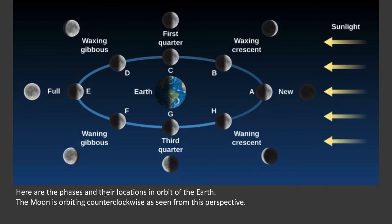Looking at this in space makes it easier to understand. The moon is always half illuminated — whatever side is facing the sun is illuminated. But because we're looking at it from different angles, we see different phases: here we'd see a crescent, here a quarter, here full, here gibbous. It takes about a month for the moon to go around and cycle through all of these different phases.